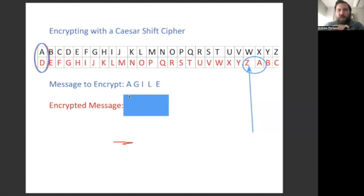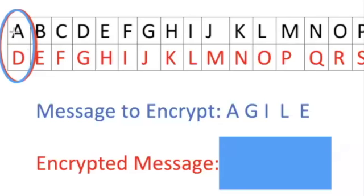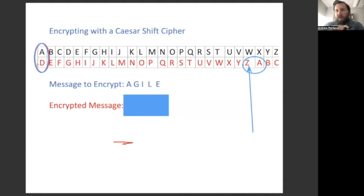I'm encrypting AGILE. First, A should be replaced by D because I have the letter D written below A. The first letter in my encrypted message is D. Then G gets replaced with J. I gets replaced with L. L gets replaced with O. And E gets replaced with H.